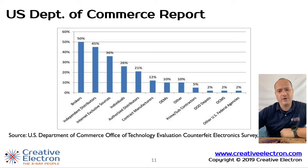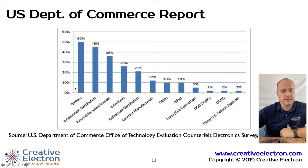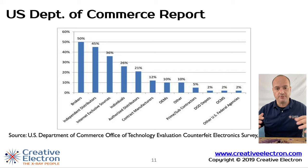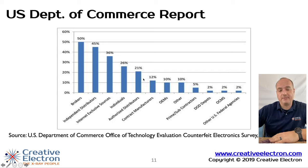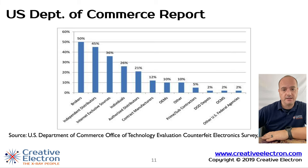The Department of Commerce report also shows the distribution of where counterfeit components are coming from. Brokers are the biggest offenders, followed by independent distributors. Not far behind are contract manufacturers — the guys who buy components from multiple sources and may end up mixing good and bad components. Even OEMs and authorized distributors appear, because they might take back mixed inventory from their contract manufacturers and, if not checking, put those back into inventory to sell to the next customer.